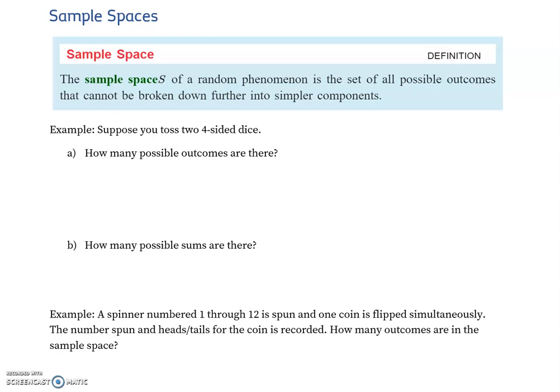Let's take a look at the idea of sample spaces. The definition we have here: a sample space, often called S, of a random phenomenon—usually just some sort of experiment that we're doing—is a set of all possible outcomes that cannot be broken down further into simpler components.